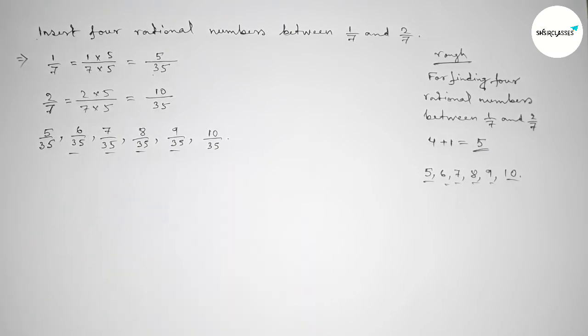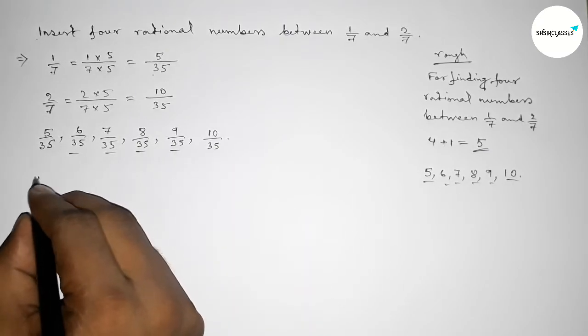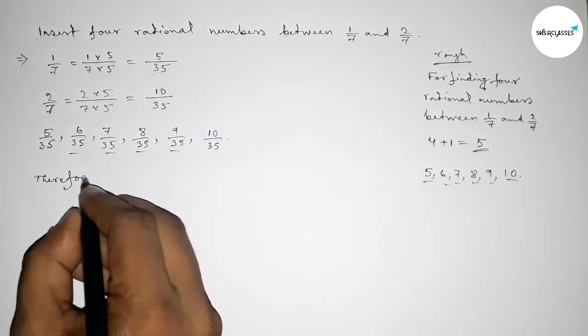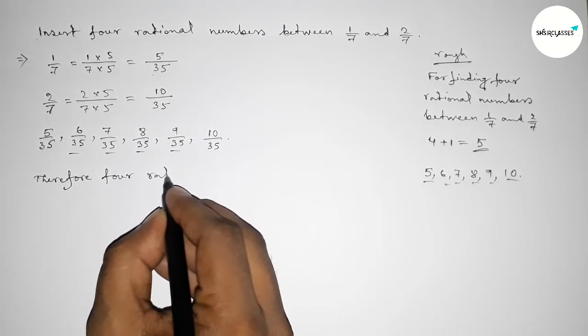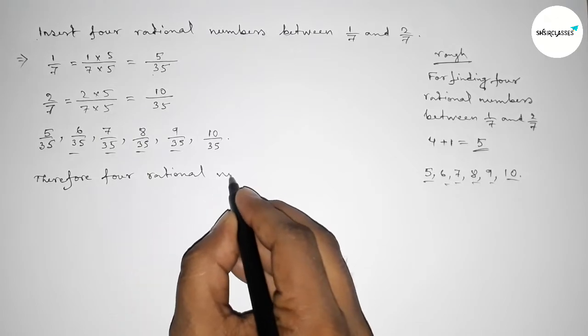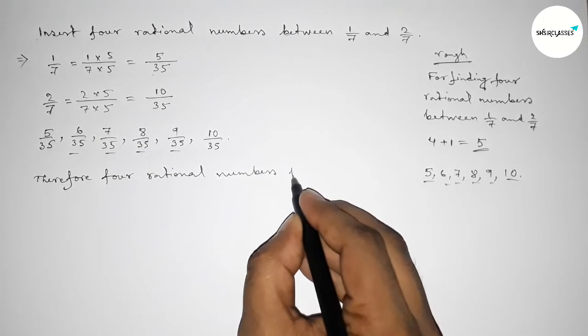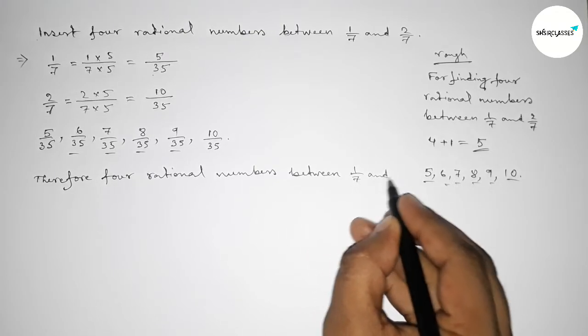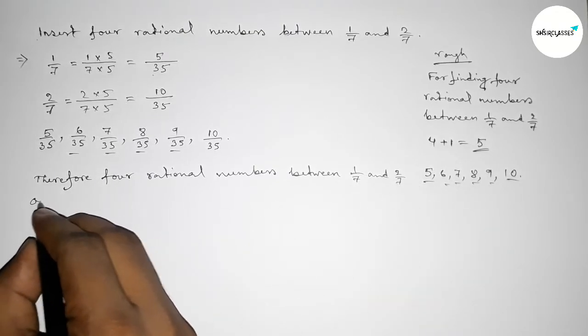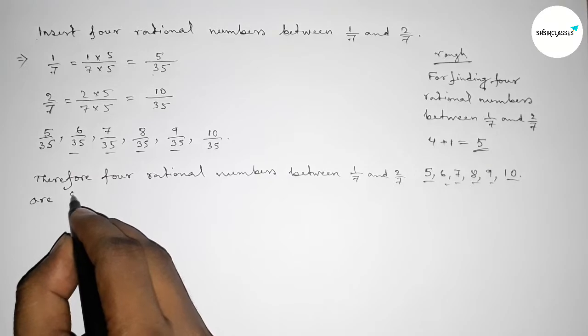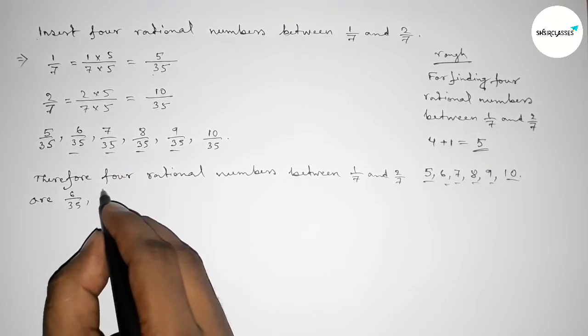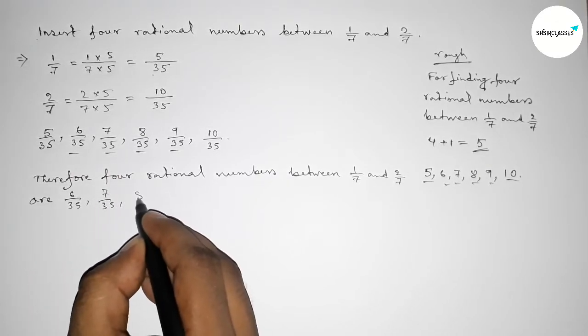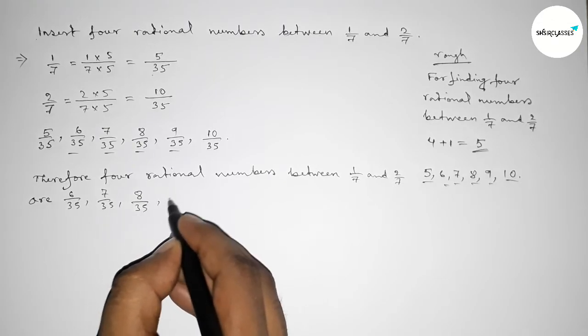So between these, these are the four required rational numbers between 1 over 7 and 2 over 7: first one 6 over 35, then 7 over 35, 8 over 35, and 9 over 35.